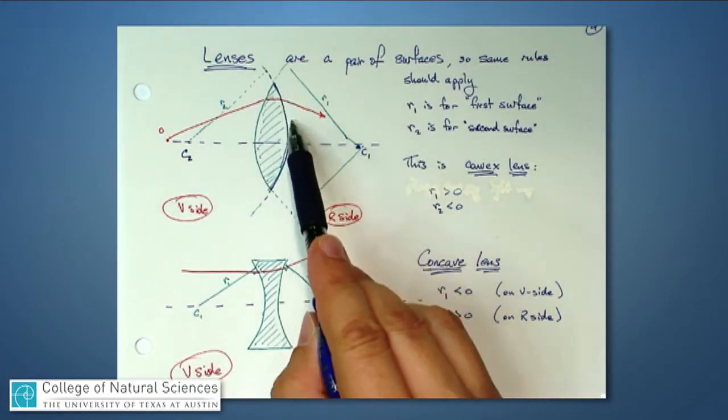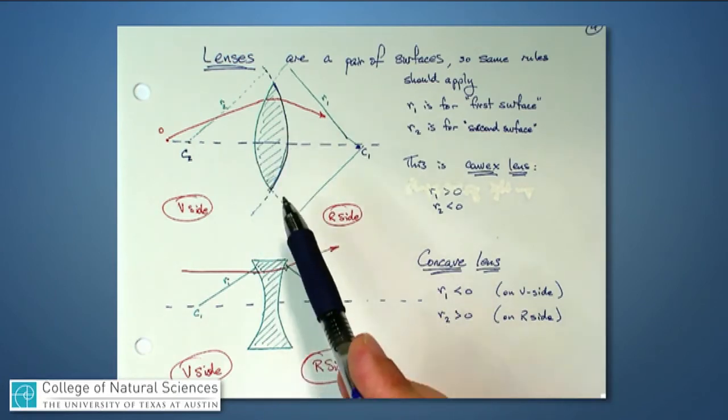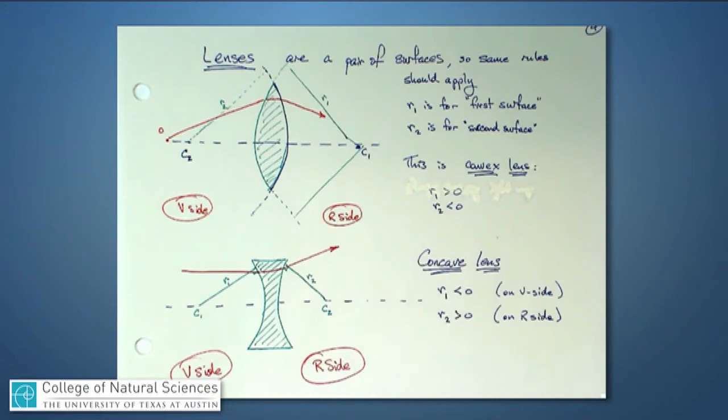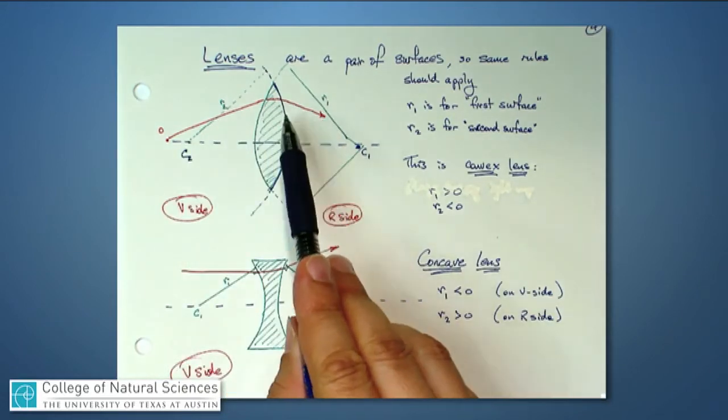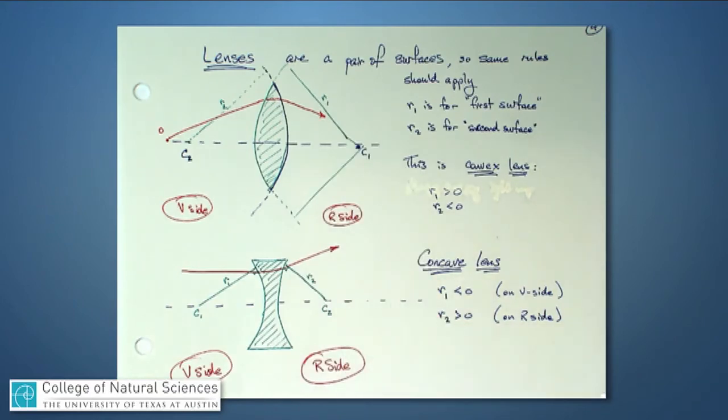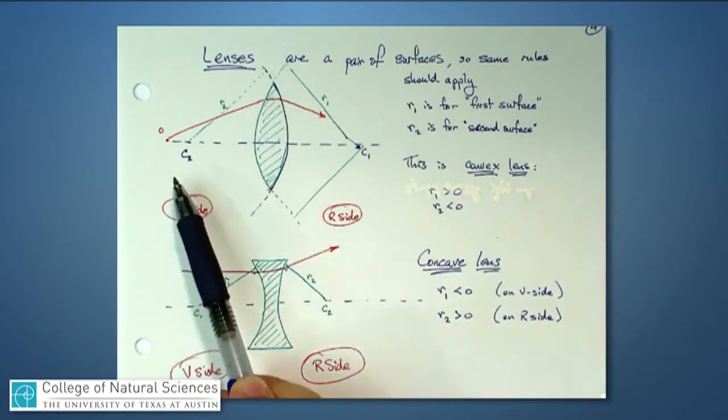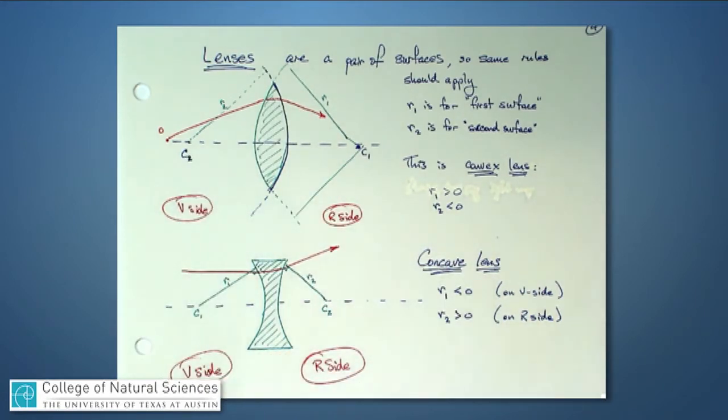R2 is connected with the second surface, and it's a little counterintuitive in this particular case here, but remember that the second surface would be the second surface that the light passes through chronologically as it's going from the object over to some remote location. In this case, R2 is a negative number because the center of curvature for this second surface is over on the V side.